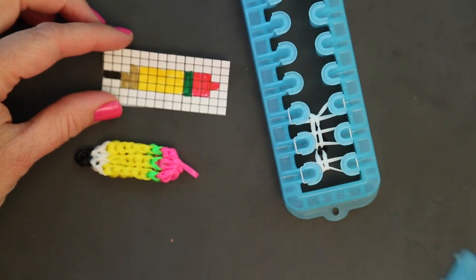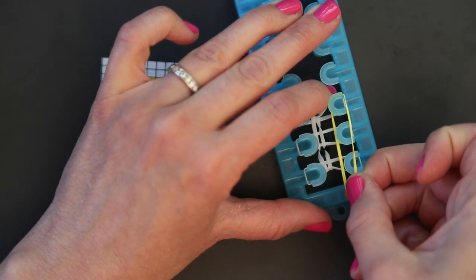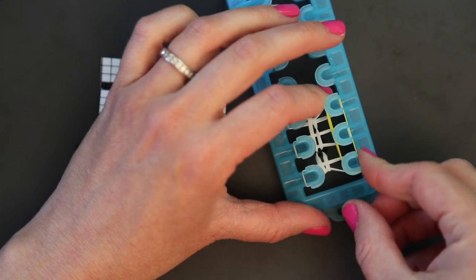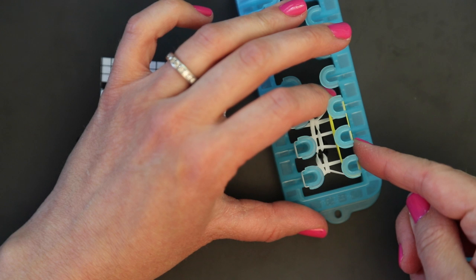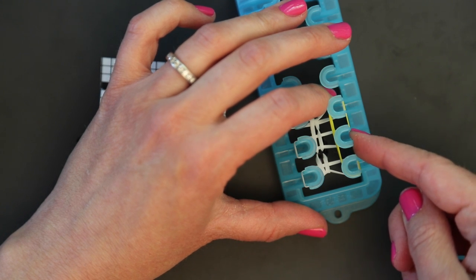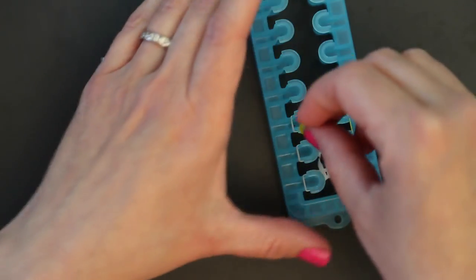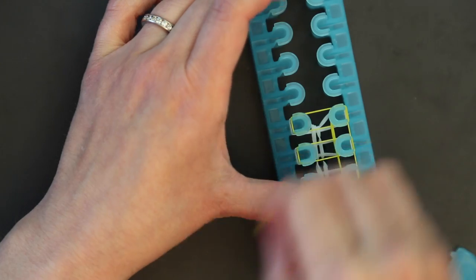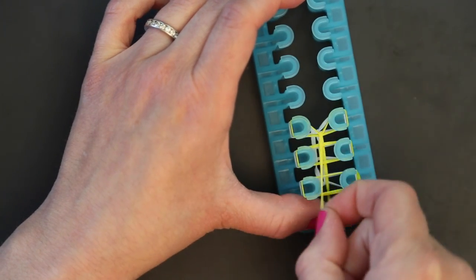And we're up to this first row, where I'm using yellow. And stretch one band across the three pegs. This is what's going to hold the pencil together. If you're using regular rainbow loom bands or the transparent bands that came in the kit, make sure you double them over. And then place straight across the three pegs.